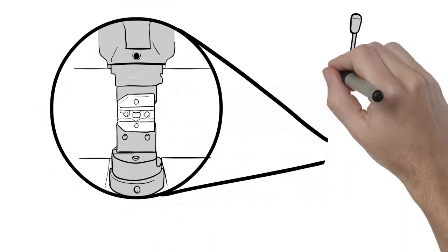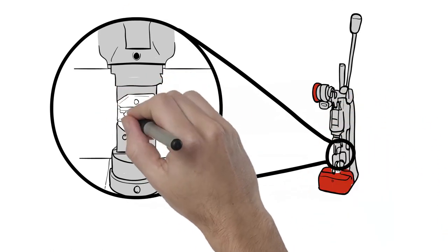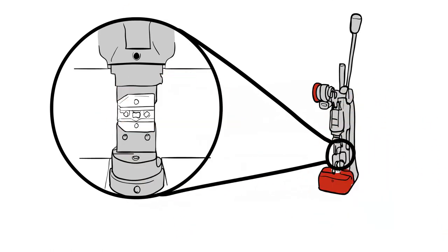The toggle press uses little power to get great crimp results. No electricity or air compressor is needed. It is easy to store and transport. And as always, all crimping dies and accessories are easily interchangeable.